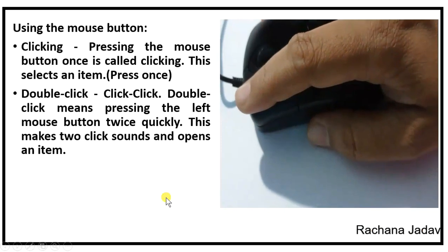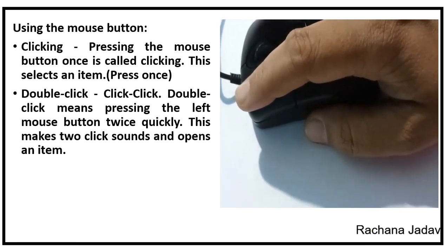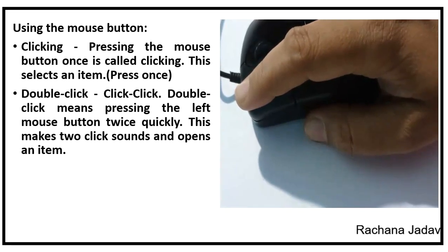When we press the mouse button once, that is called clicking. And by clicking you can select the item. If item is linked to your option or your icon, whatever program it is, you can only select the item.